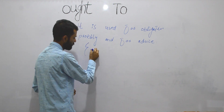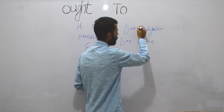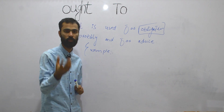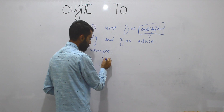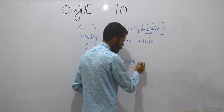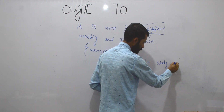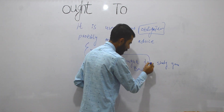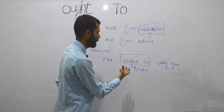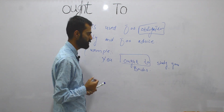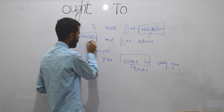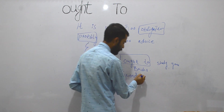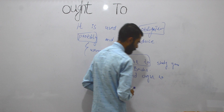Let me make examples for you. First, obligation — obligation means responsibilities. When you are reminding someone of their responsibilities, you use 'ought to'. For example: 'You ought to study your books.' Here I am reminding a student of his responsibilities.